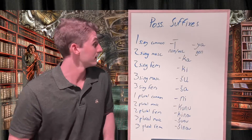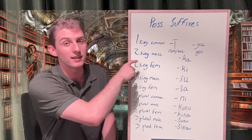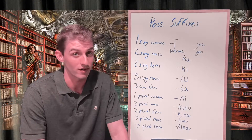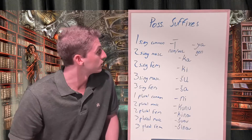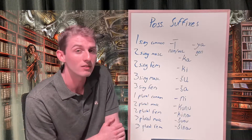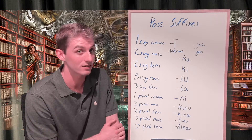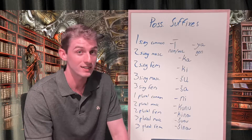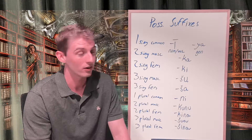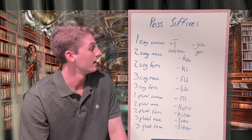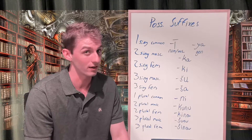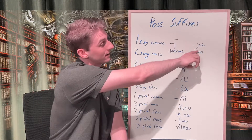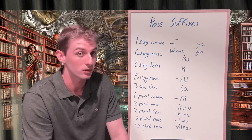Here are the possessive suffixes. There's one special case for the singular first person common, where we have two different options depending on the case. If the noun is in the nominative or accusative case with a first person singular possessive, we find a long 'i.' For example, translating 'my father sees the castle,' we would see 'abu' meaning father with a long 'i' ending: 'abī.' If the noun is in the genitive, such as 'I seized the castle for my father,' we would see 'abiya' with a separate case ending. Both give the meaning of a first person singular possessive.